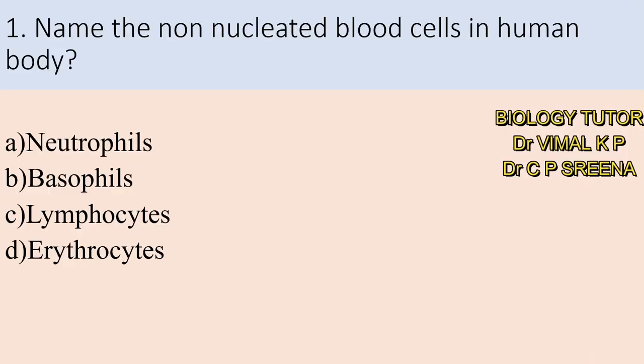First question: name the non-nucleated blood cells in the human body. A. Neutrophils, B. Basophils, C. Lymphocytes, D. Erythrocytes. Which is the answer? Here answer is D — Erythrocytes.